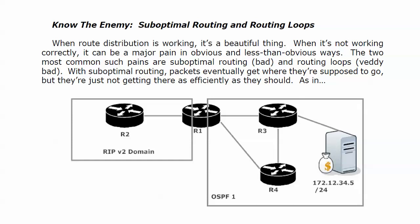When route redistribution is working, as we've seen and hopefully we'll continue to see, it is a beautiful thing. And when it's not working correctly, it could be a major pain in some obvious ways when we're not getting some routes or when we don't have some connectivity, but there are also some less than obvious ways route redistribution can go wrong on us.